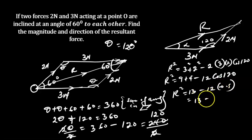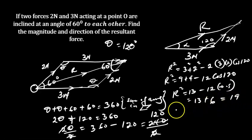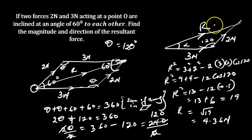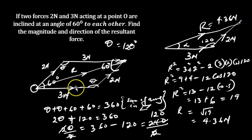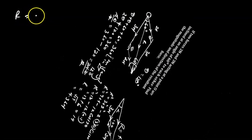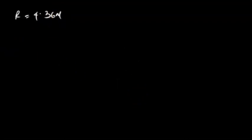Minus times minus becomes plus. 0.5 times 12 equals 6. So R squared equals 13 plus 6, which is 19. Therefore R equals the square root of 19. Using a calculator, the square root of 19 equals 4.36 newtons. Now that we have R equals 4.36 newtons, we can go ahead and solve for alpha, which will tell us the direction of R.